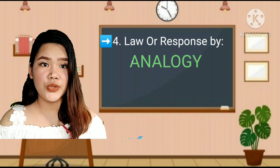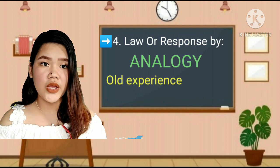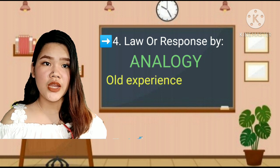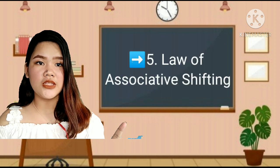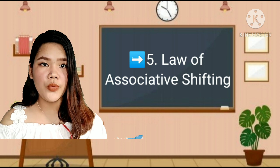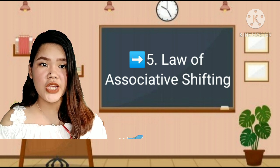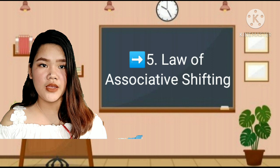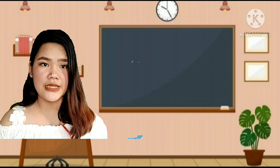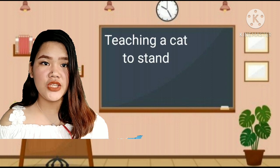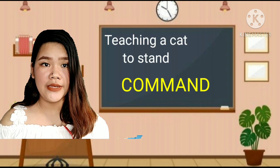The individual makes use of old experience while trying to learn a new situation. The last is associative shifting: we may get a response of which a learner is capable associated with any other situation to which he is sensitive. Thorndike illustrated this by the act of teaching a cat to stand up on command.